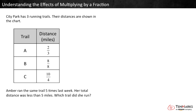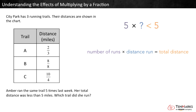Now try a problem. City Park has 3 running trails, and their distances are shown in the chart. Amber ran the same trail 5 times last week, and her total distance was less than 5 miles. Which trail did she run? We know that multiplying the number of times she ran by the distance she ran each time will give us her total distance. This number sentence represents the problem.